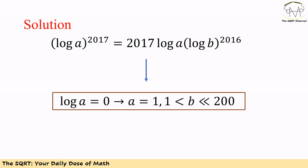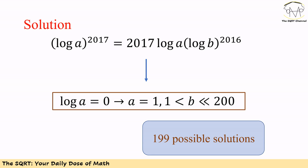After simplifications, log A appears on both sides. We don't know if log A can be 0, so let's consider that case first. If log A equals 0, then A equals 1, and no matter what value B takes, the equation holds. So B can be any integer greater than 1 and less than or equal to 200, giving us 199 possible solutions with A equal to 1.